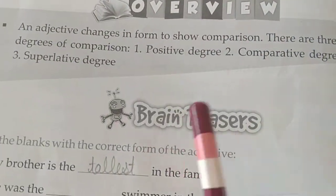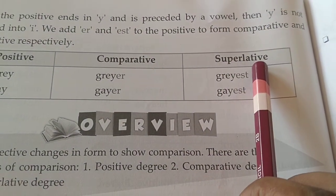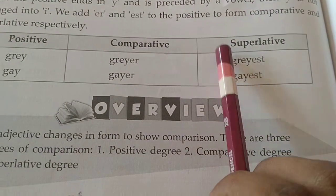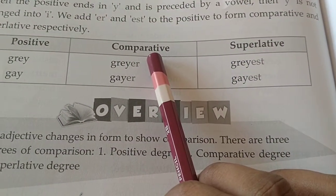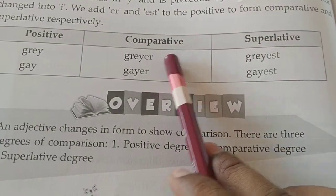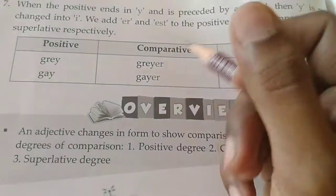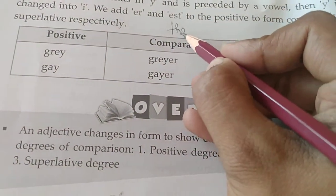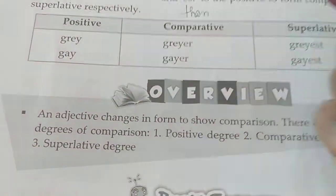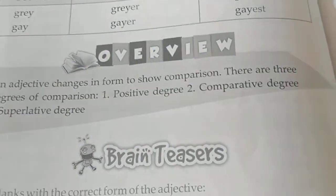The first thing you need to remember is that if you want to use the superlative degree, 'the' should be there. Comparative degree will come if there is a comparison between two. If more than two, then superlative. If 'than' is there, then you can use comparative. If 'the' is there, then you can use superlative.